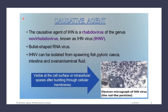The causative agent of IHN is a rhabdovirus of the genus Novirhabdovirus, also known as the IHNV. This virus is a bullet-shaped RNA virus. It can be isolated from spawning fish, pyloric caeca, and the fluid in the ovarian or seminal fluid. We have here an electron micrograph of the IHN virus showing the rod-like particles.